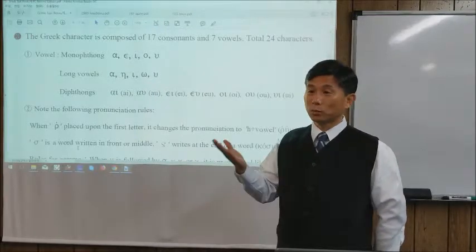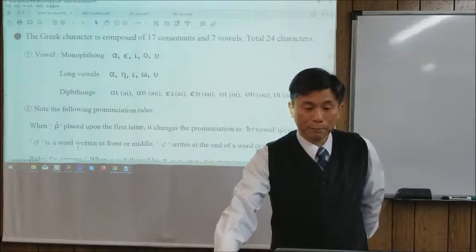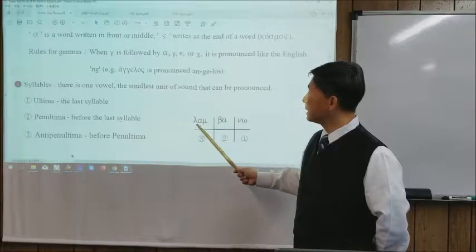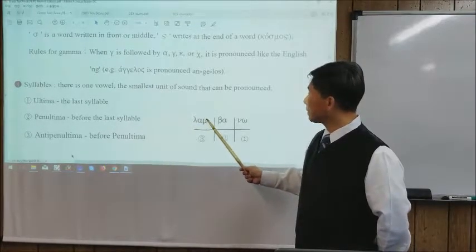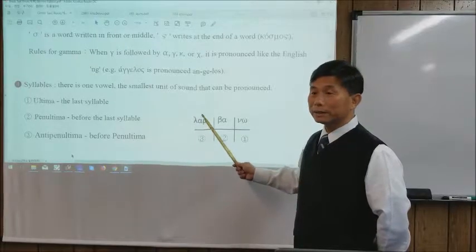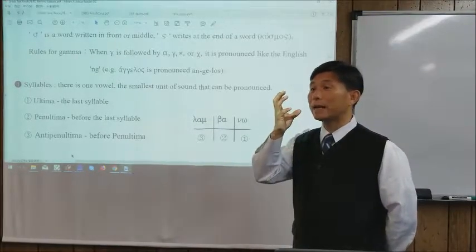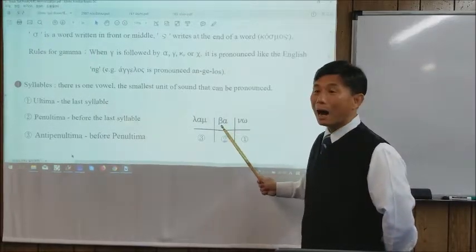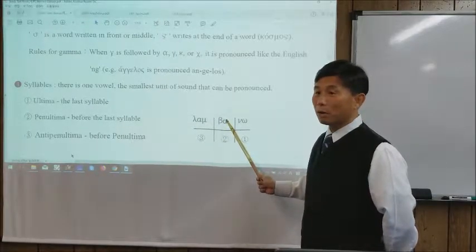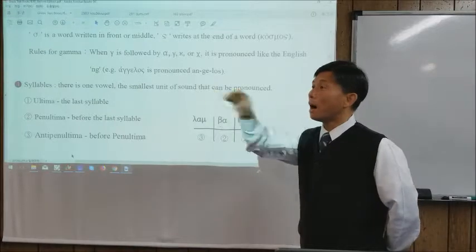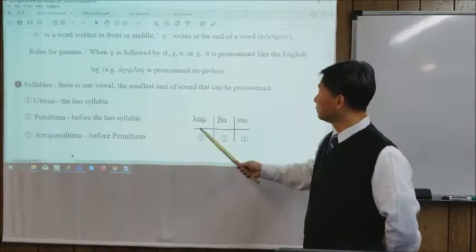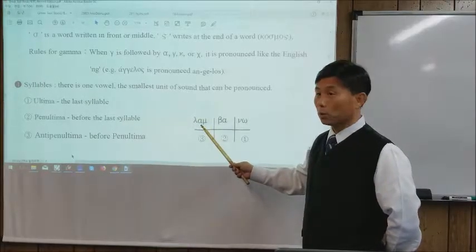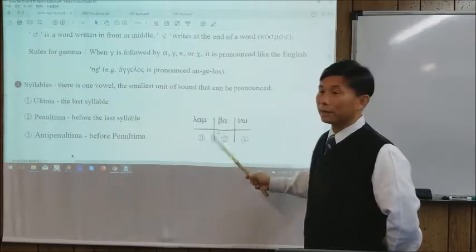For example, in the word 'lambano': the first syllable 'lam' — because a consonant comes after the vowel, this is a closed syllable. But the second syllable 'ba' ends with a vowel, the 'a' sound, so 'ba' makes a long vowel.